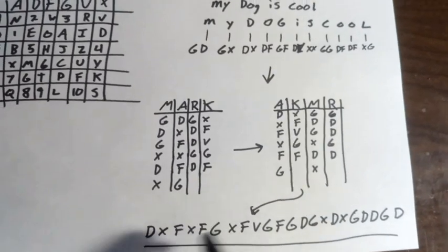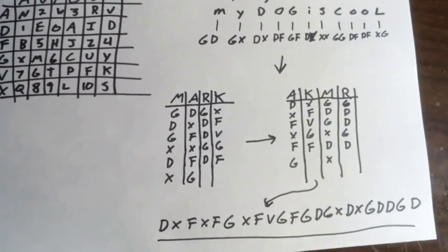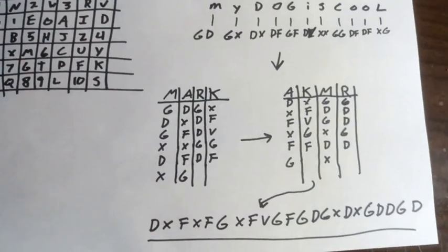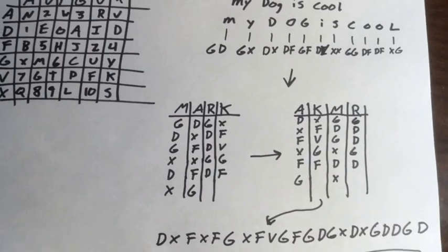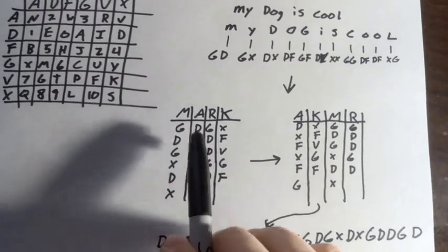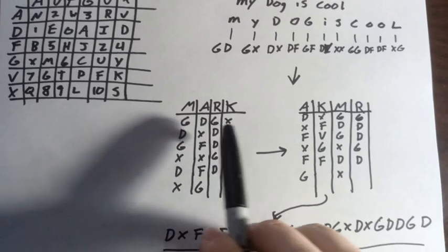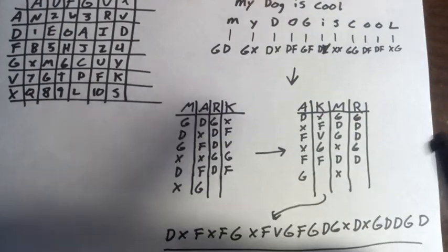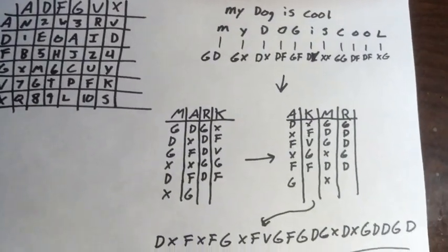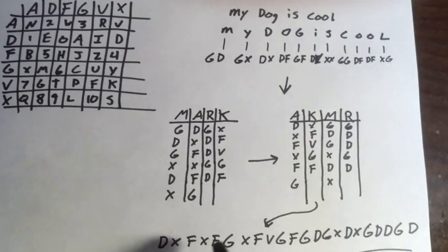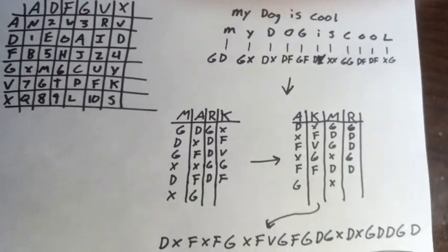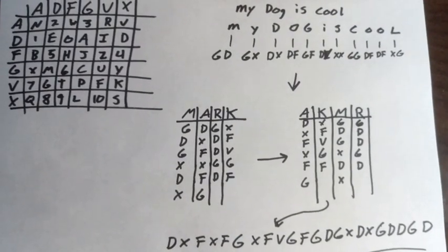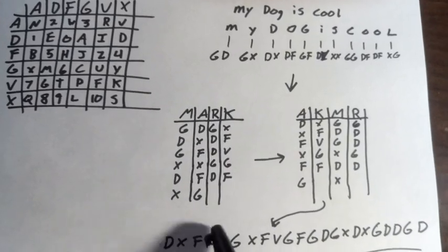If you wanted to go backwards through this, you would basically just follow exactly the same steps. You would take your code here, and because you know the code, you would write it out like this and rearrange it into alphabetical order. Then you would take these and fill them in, and then this one and fill them in, and it would be easy peasy.